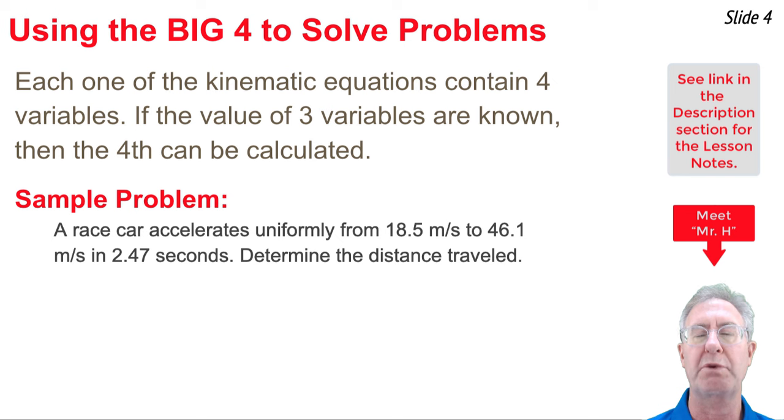First what you have to realize is that every equation has four variables in it. So one of the basic ideas of using the equations is you read through a problem like the one you see here, and you look for three variables whose values are known. And then you find the one variable that you're trying to calculate. Once you've identified these four variables, the three that are known and the one that's not known, then what you do next is you look for the equation that can be used to solve for the unknown variable.